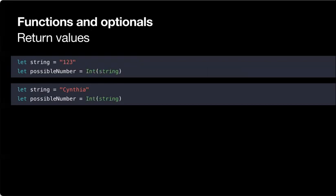You can also have functions that return nil. For example, if you have a string '123' and use the Int initializer with a string parameter to create an integer, that works because 123 is a valid integer. But if you try to convert text like 'hello' into a number, it will give you nil because it's not a valid number. The Int initializer returns an optional value, and you need to handle that in your code.